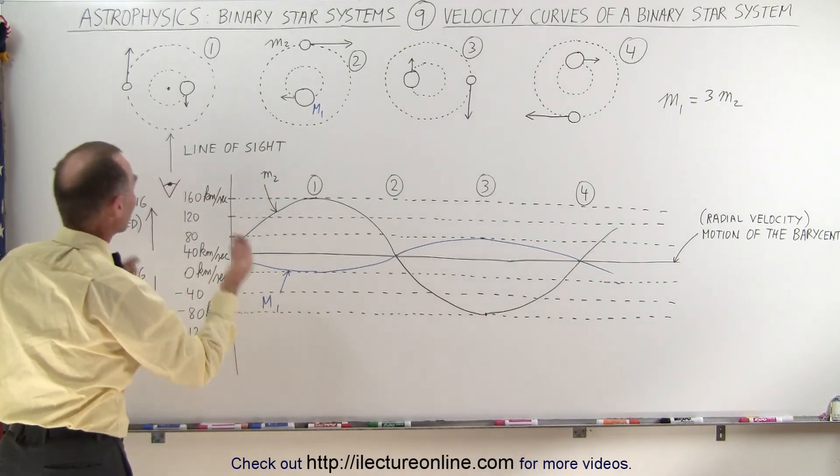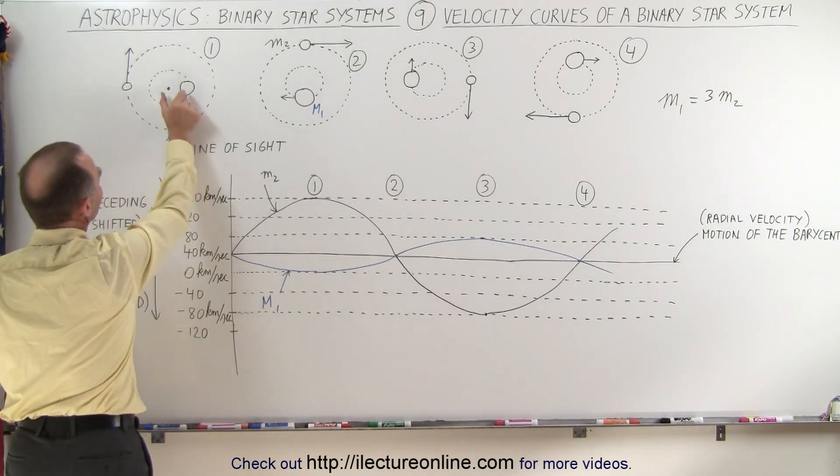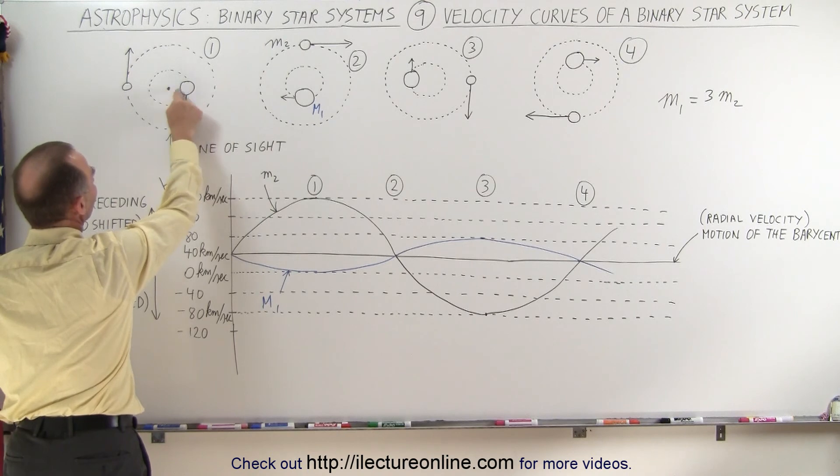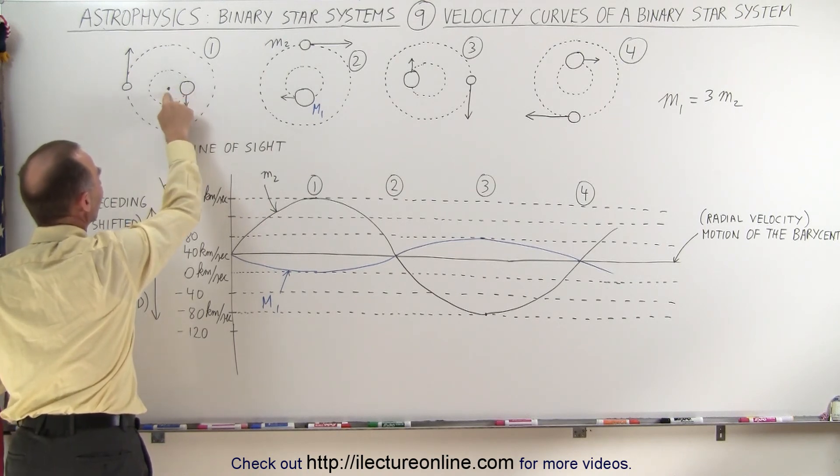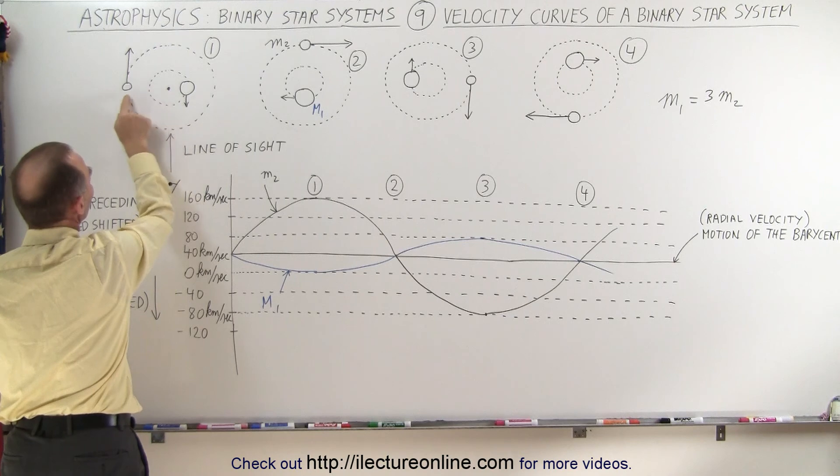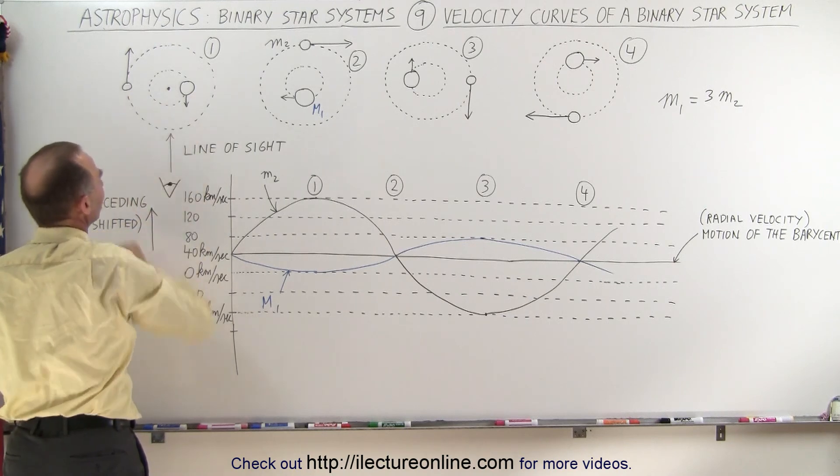Which then, of course, from the previous video, we realize that the distance R1 from the center of M1 to the barycenter is only one-third the distance from R2 to the barycenter.